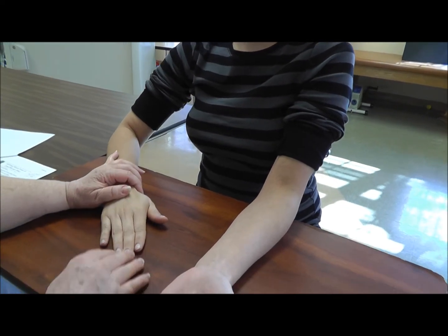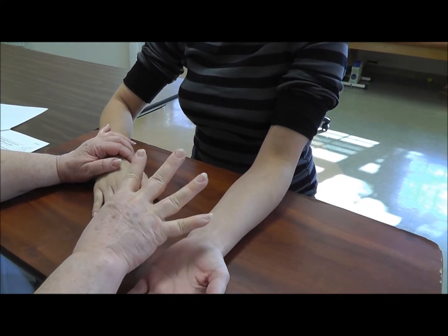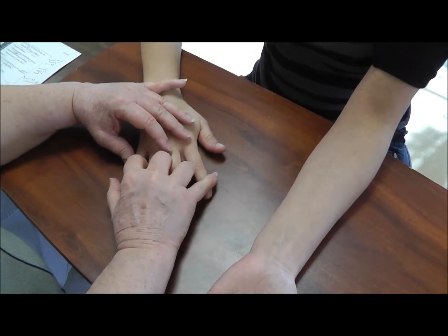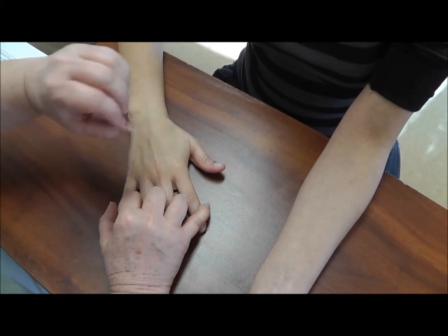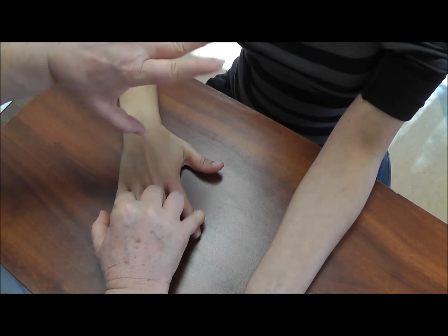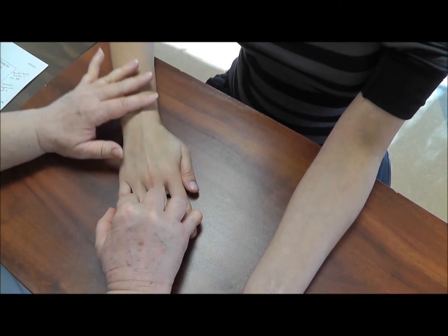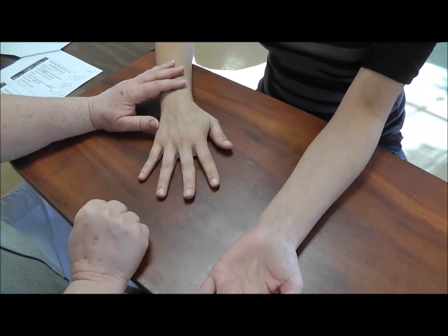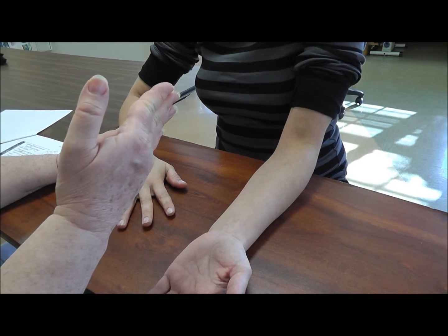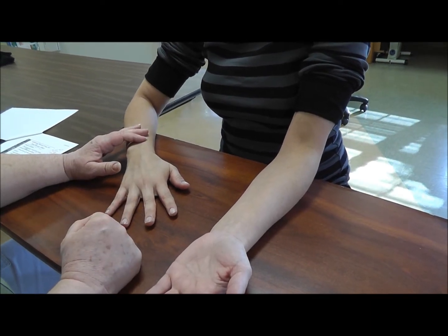Then you can test for strength in abduction and adduction. So I'm just going to kind of put my fingers in this way and then try to spread out. Okay. Good. And then pull in. Okay. So you're just testing for strength in abduction and adduction. You could use a piece of paper or maybe something a little thicker to have them grip onto for adduction. Okay.